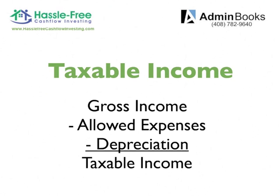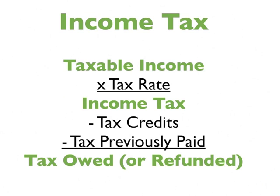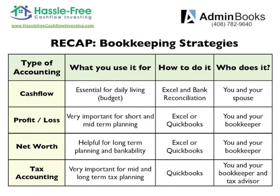Taxable income is your gross income minus your expenses, less the depreciation. That's what's left as your taxable income. Then you take taxable income times your tax rate — that's the income tax you pay — less any credits and less anything you previously paid in estimated taxes. That final number is the amount you owe or have overpaid.